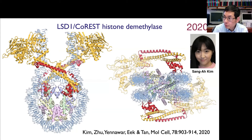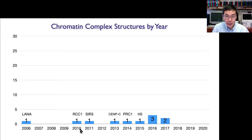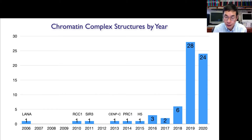Looking at the historical timeline: nucleosome structure first solved in 1997-1998, then it took almost 10 years to get a structure of just a peptide on the nucleosome. 2010 saw the first full protein-nucleosome structure. We were getting just one structure per year for multiple years, a few more in 2016-2017. Then because of cryo-EM, we now have an order of magnitude more structures — about 25 in 2019 and 2020 alone — allowing us to derive real principles.